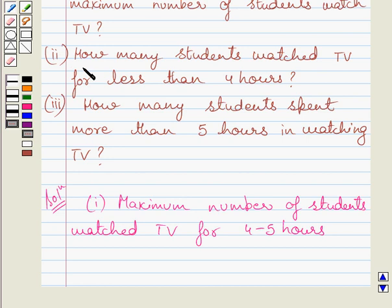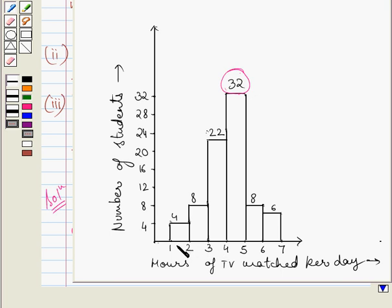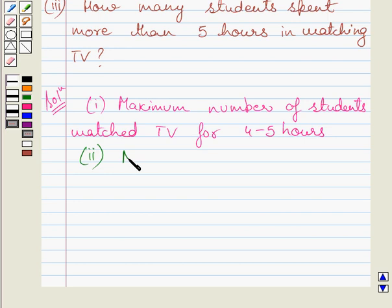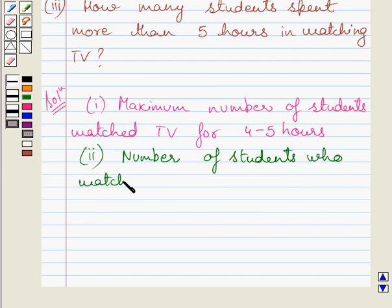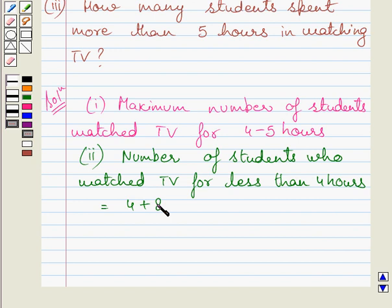Now, the second part of the given question is: how many students watch TV for less than 4 hours? Less than 4 hours means all the students lying in the category of 1 to 2 hours, plus students lying in the category of 2 to 3 hours, plus students lying in the category of 3 to 4 hours. The sum of all these 3 frequencies gives the number of students who watch TV for less than 4 hours. So, the number of students who watch TV for less than 4 hours is equal to 4 plus 8 plus 22.